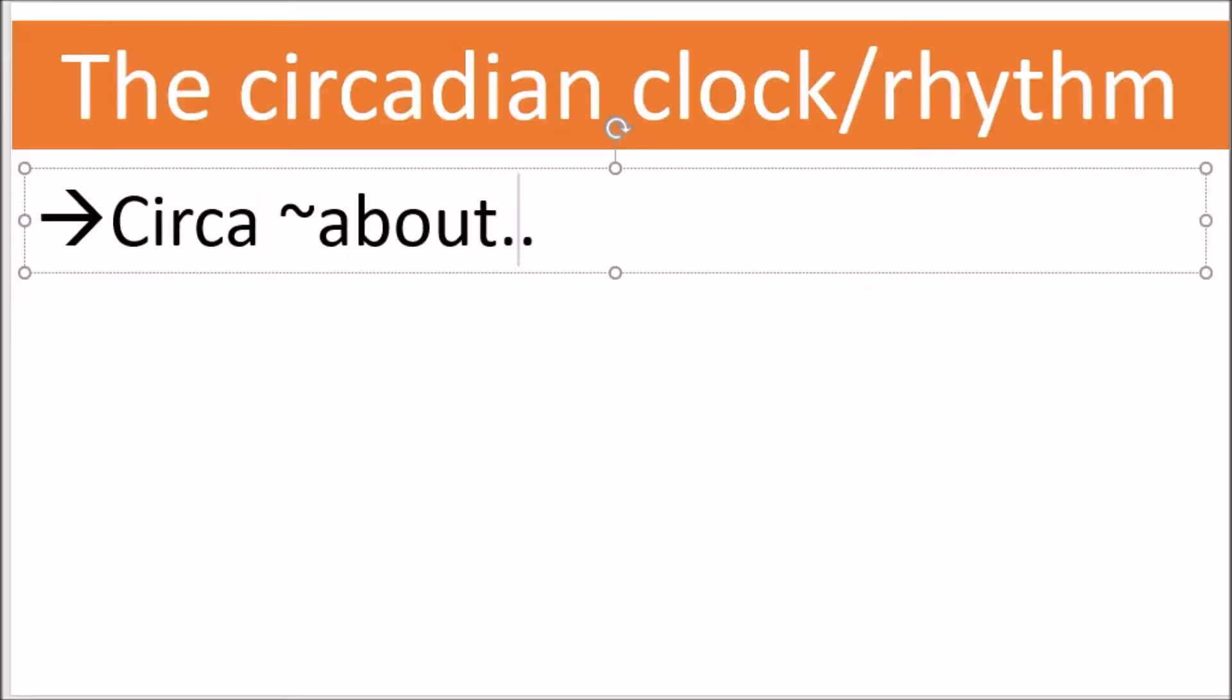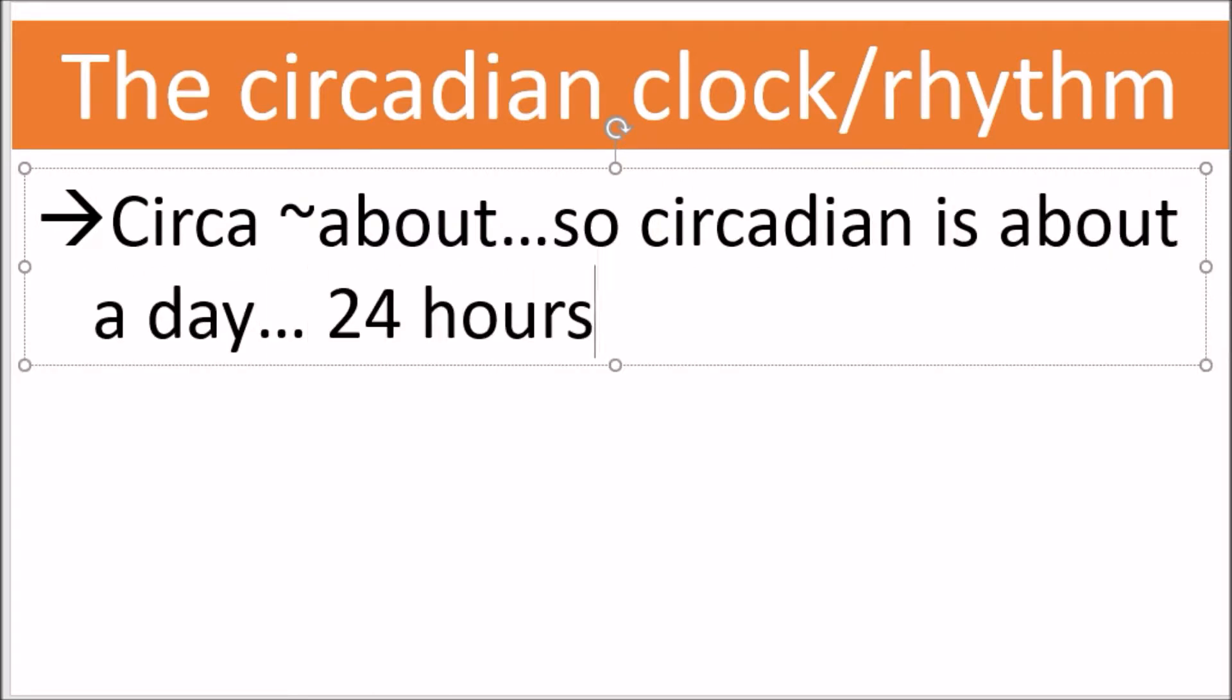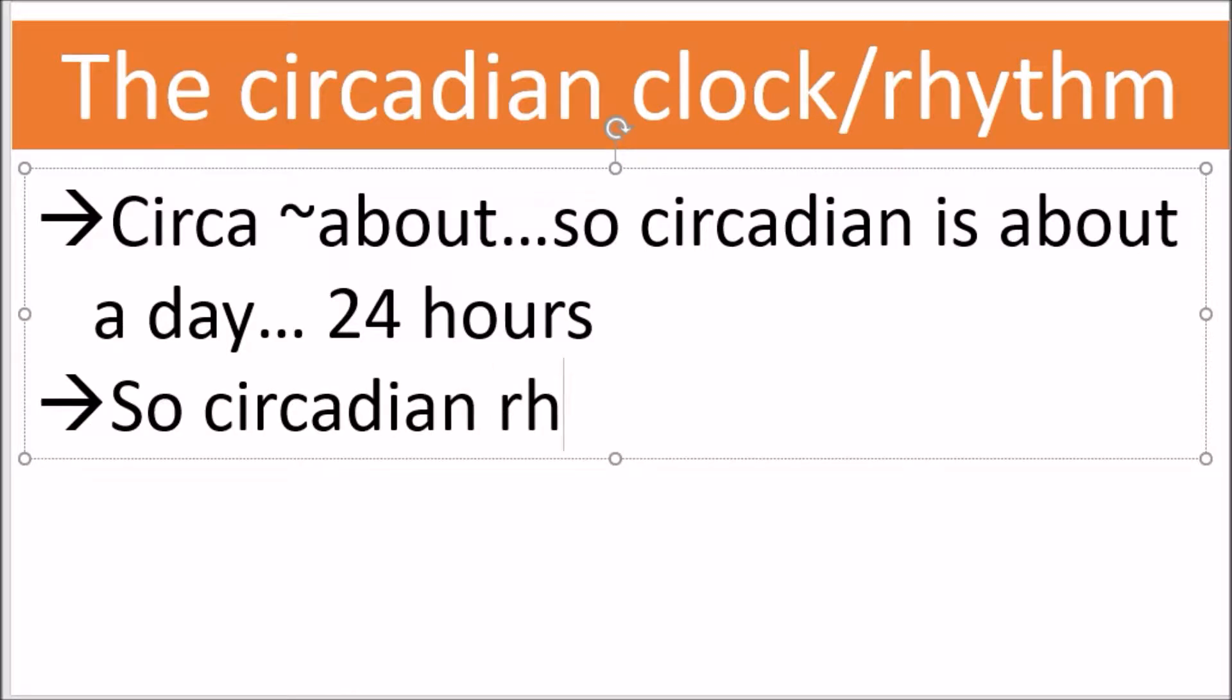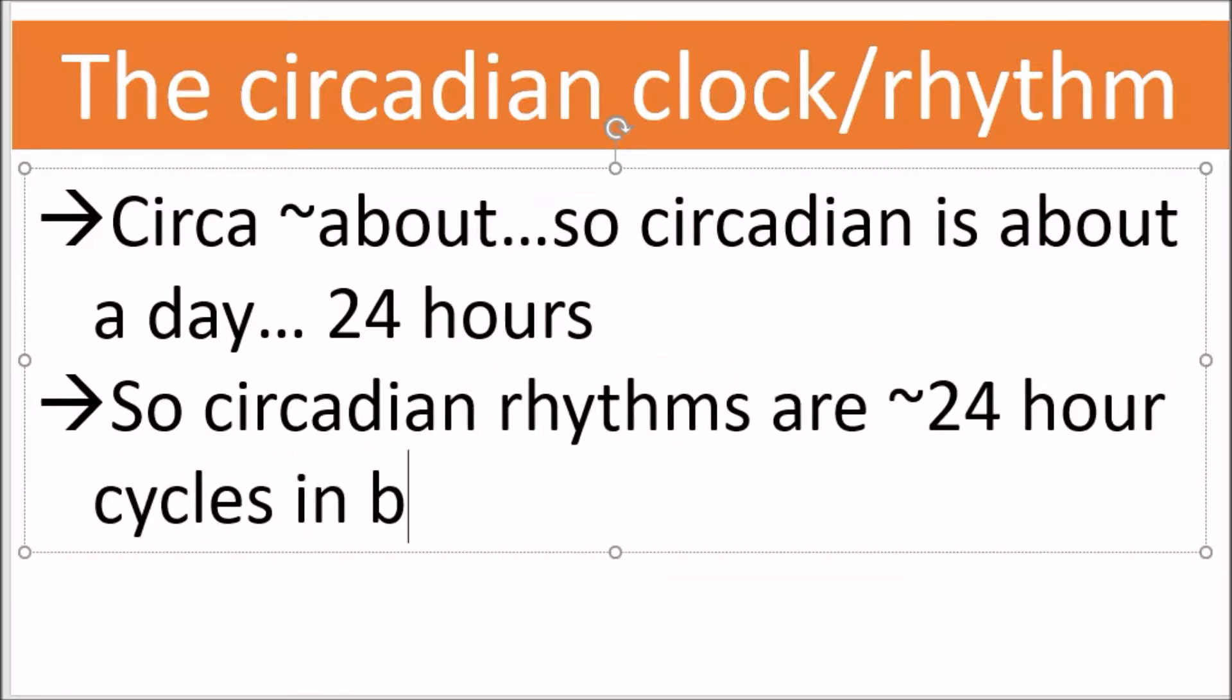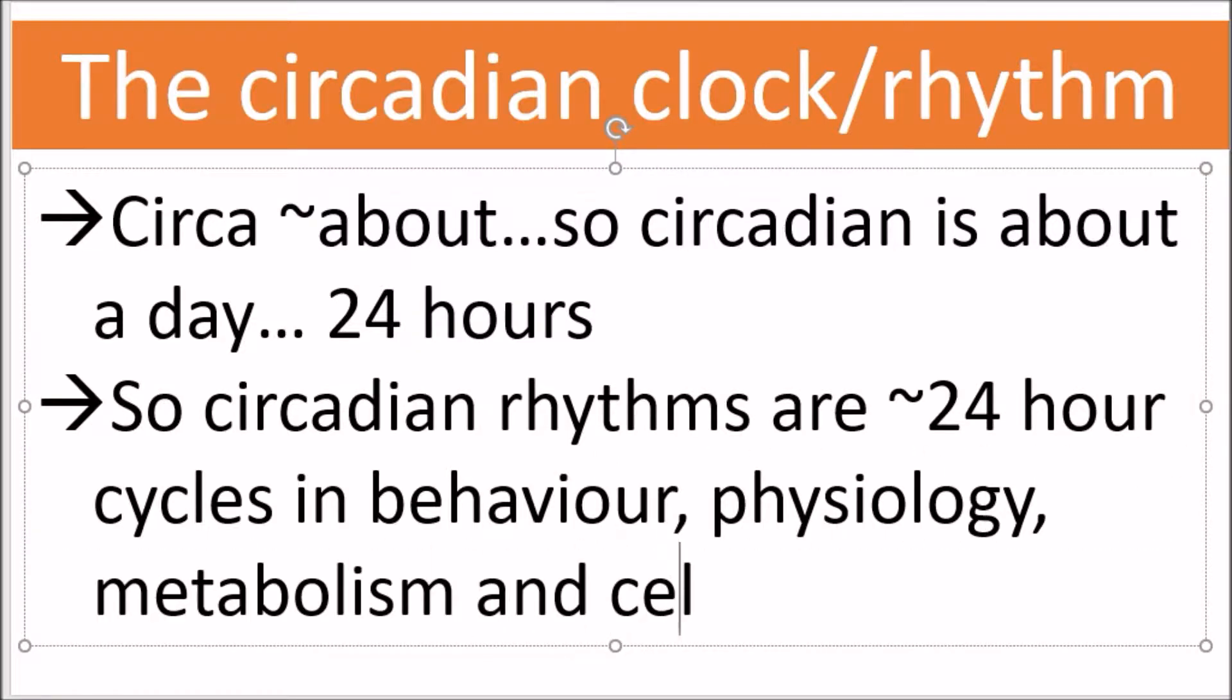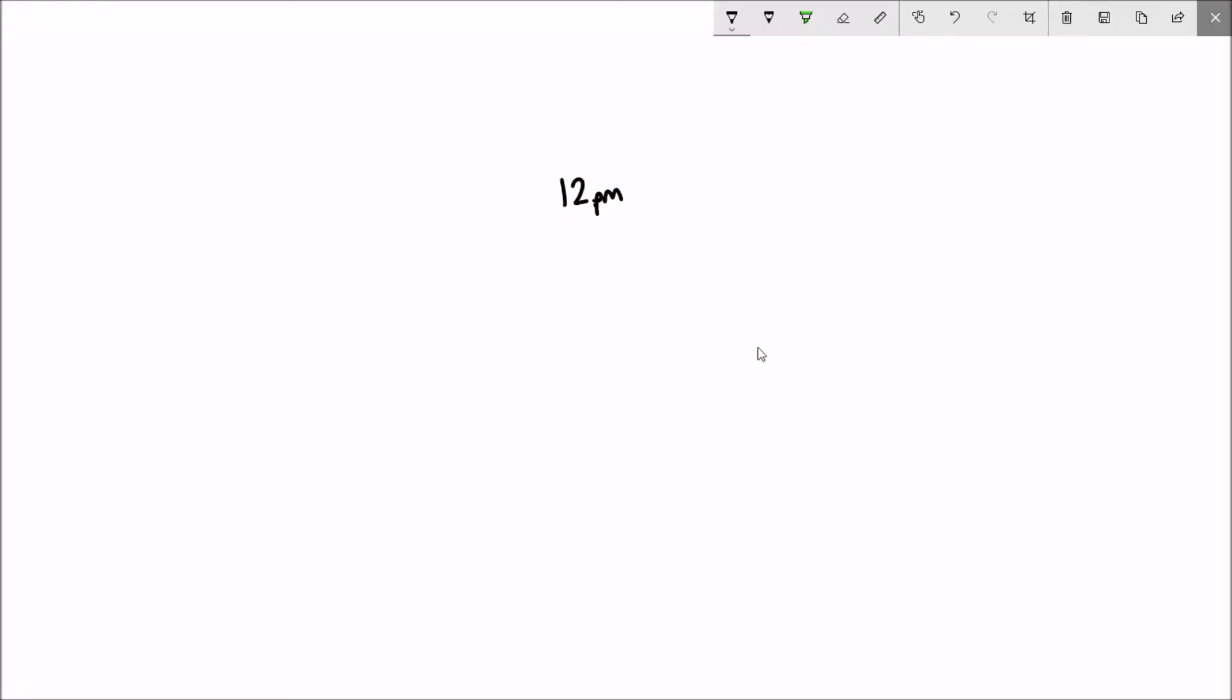Let's quickly recap what the circadian rhythm actually is. The circadian rhythm includes cycles in behavior, physiology, metabolism, and cell activity that fluctuate on around a 24-hour timescale, hence the name circa diem, meaning about a day.